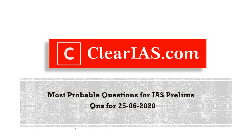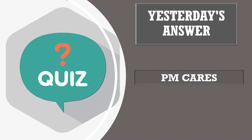Hi guys, welcome to today's session. Thank you all for your responses from yesterday. Yesterday's quiz question was to name the fund the government set up in March 2020 to tackle distress situations such as caused by COVID-19. The answer is PM-CARES — Prime Minister's Citizen Assistance and Relief in Emergency Situations Fund. Remember, PM-CARES is different from the Prime Minister's National Relief Fund (PMNRF) which we discussed yesterday.